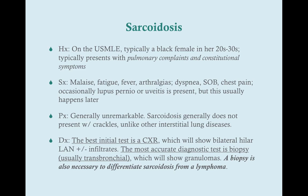The best initial test is going to be a chest x-ray, just because it's easy to do. The patient has pulmonary complaints, so we're going to need a chest x-ray anyway. That's going to show bilateral hilar lymphadenopathy with or without infiltrates — usually early on in sarcoidosis it's just going to be the bilateral hilar lymphadenopathy. The most accurate diagnostic test is going to be a biopsy, which is going to show the granulomas. Usually we can do the biopsy transbronchially, but we can take multiple different approaches.